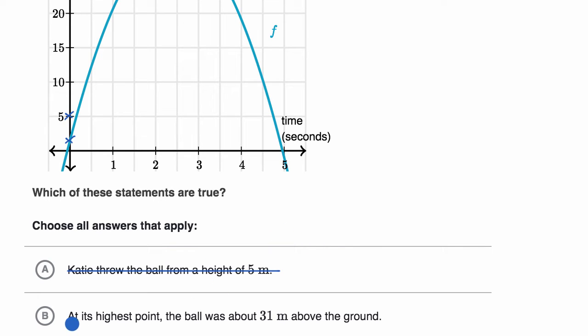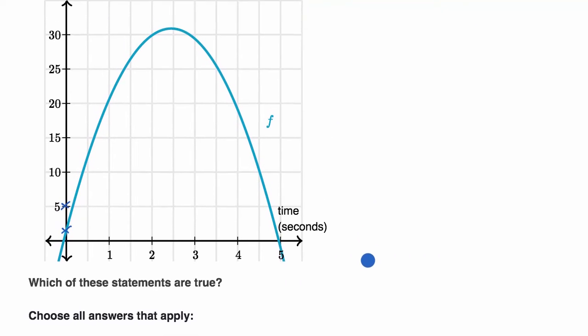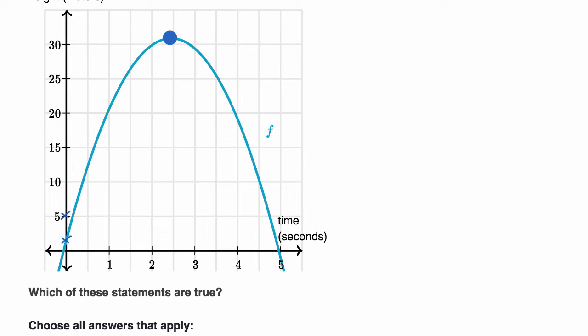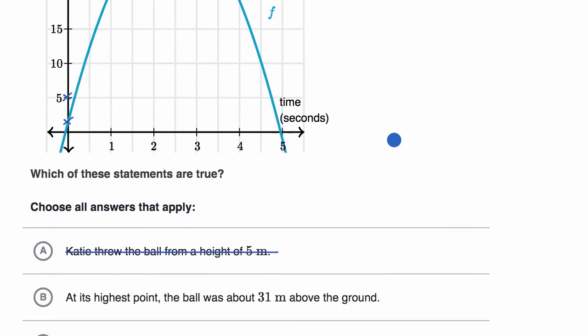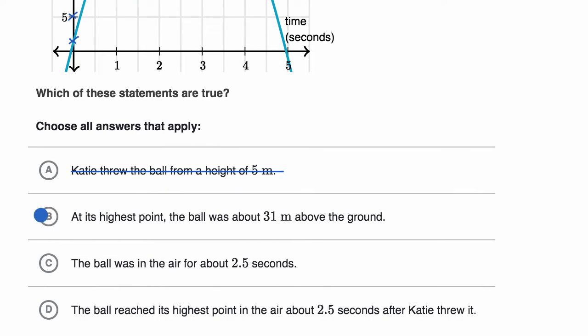The second one says at its highest point, the ball was about 31 meters above the ground. Let's see if that is true. So the highest point is right over here. And yeah, that looks about 31 meters. So I like that choice. So I will select that one.